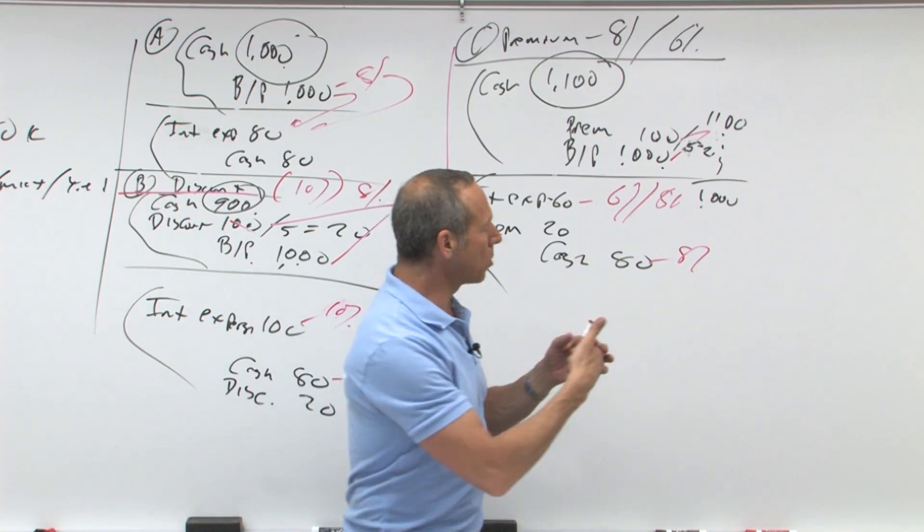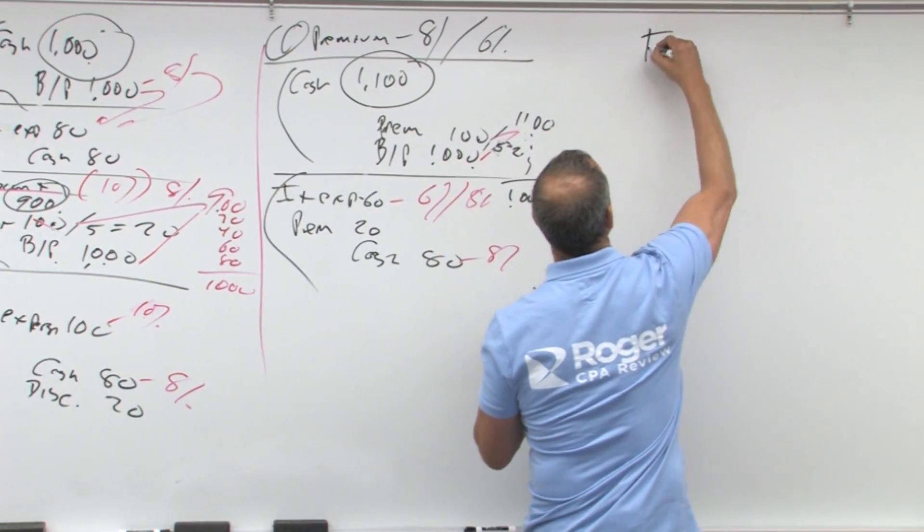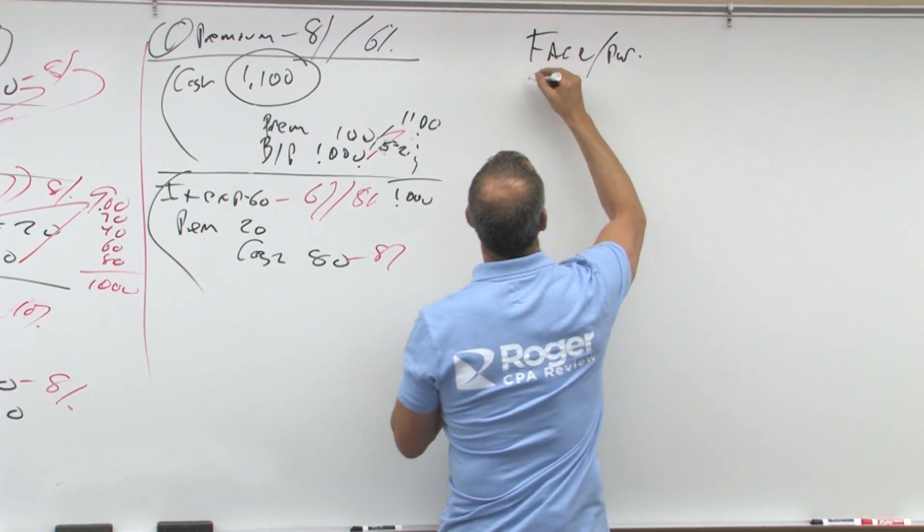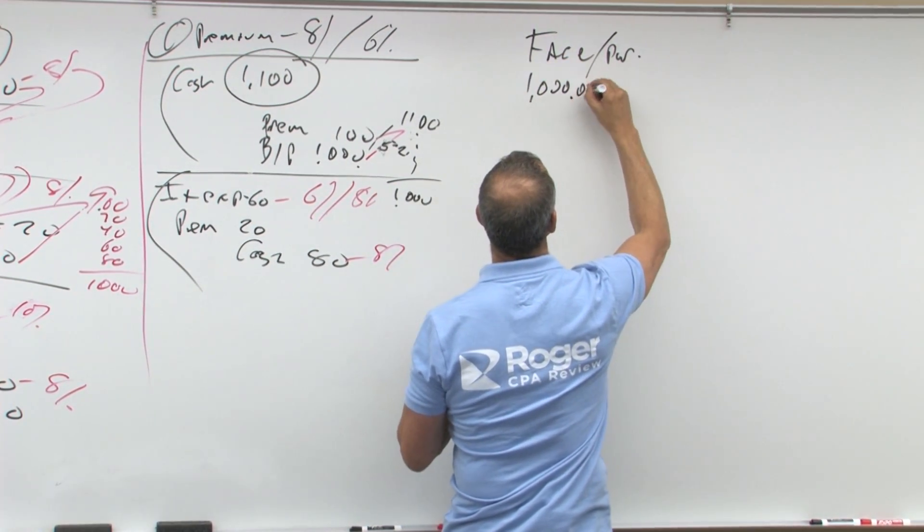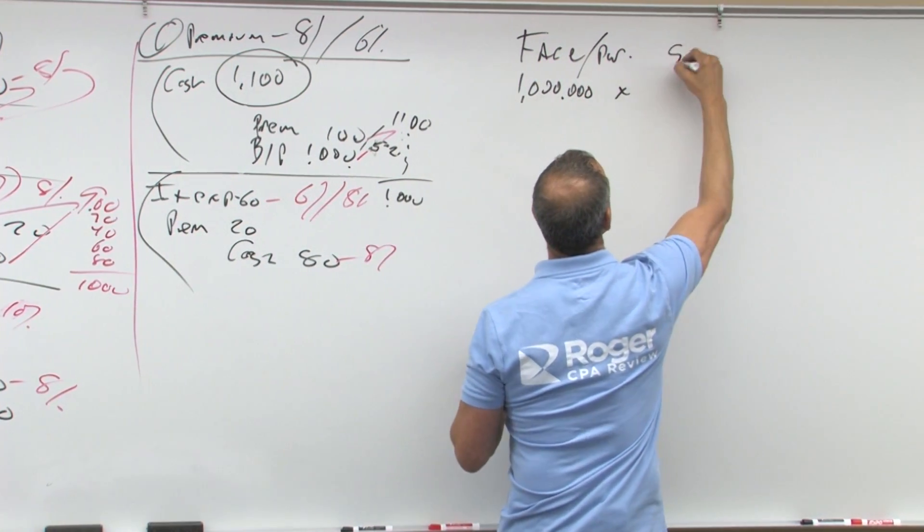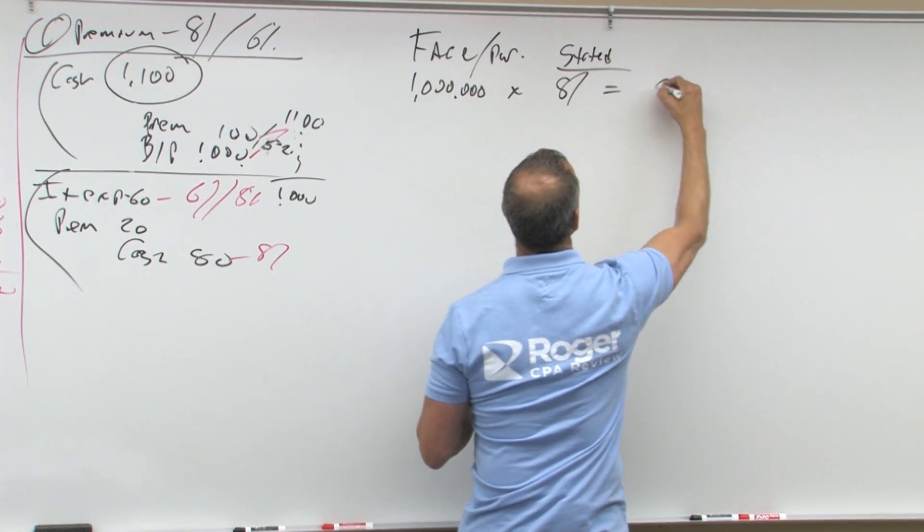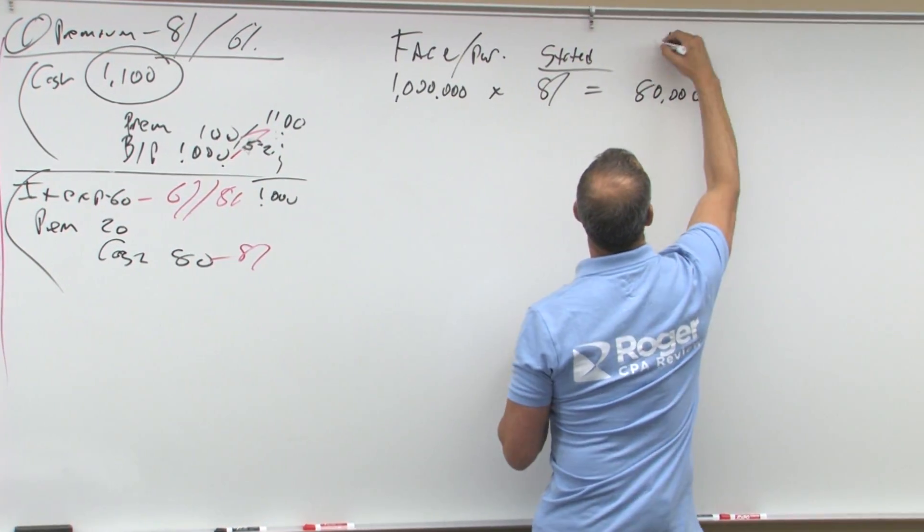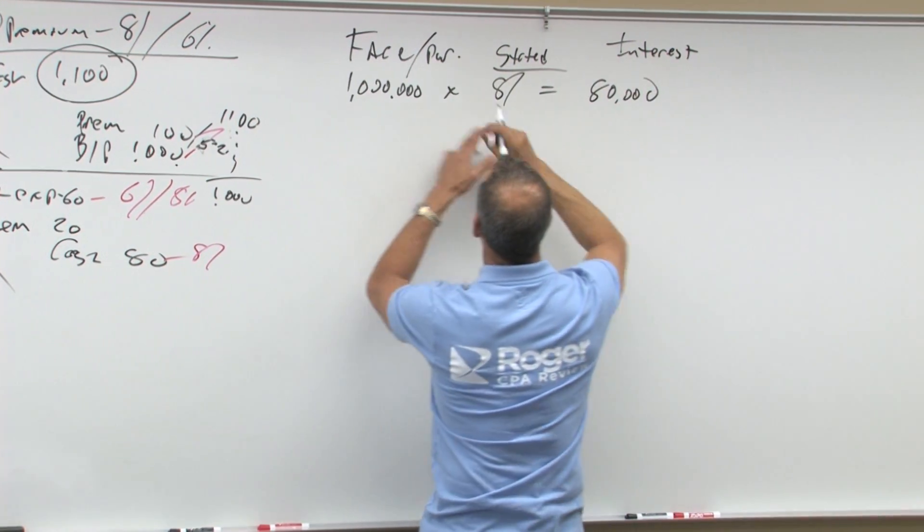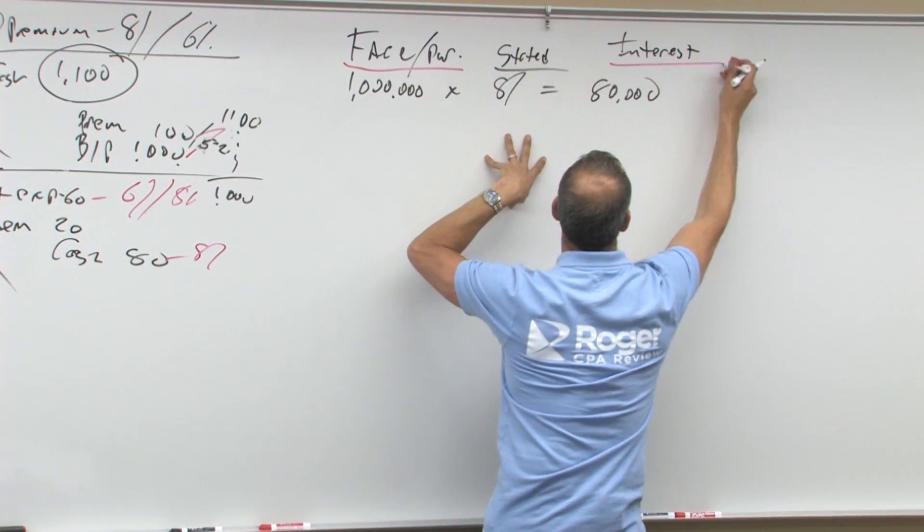So let's think about it. When I'm looking at the million dollars, here's the face, the present value of the face or the par value, and that would be the one million dollars times the stated rate. The stated rate was eight percent equals 80,000, and that is the interest. So we have to present value two things, the face and the interest.